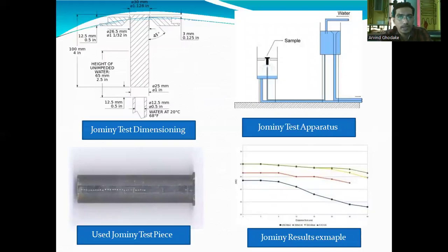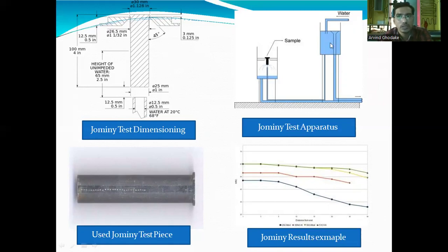This diagrammatic representation shows the arrangement of the sample for the Jomini test. Sample dimensions: diameter of approximately 25 mm (1 inch) and length of 100 mm (4 inches). A collar is provided at one end; the other end is free. The nozzle at the bottom has a size of 12.5 mm, spraying water at 20°C. In the apparatus, water is stored in a tank; the sample is held by the collar, and through the pipeline water is sprayed through the nozzle, forming a water umbrella that performs the sudden quenching operation at the end of the sample.